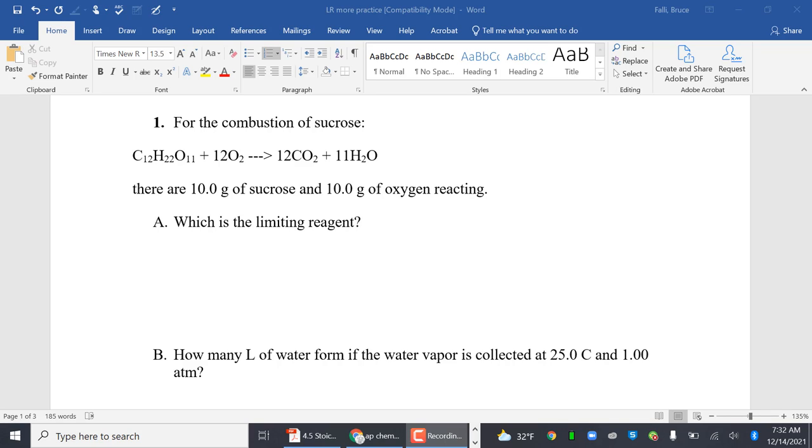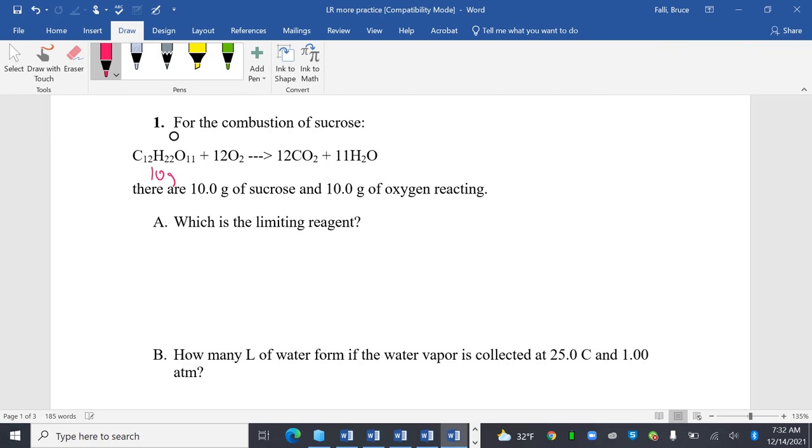So, for the combustion of sucrose, I get a reaction there. There are 10 grams of sucrose and 10 grams of oxygen reacting, which is the limiting reagent. I'm going to label each one of these. And to find the limiting reagent, remember, a great trick is we're going to convert them both into the same thing.